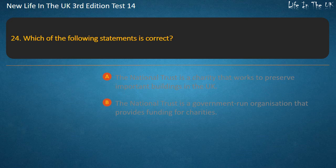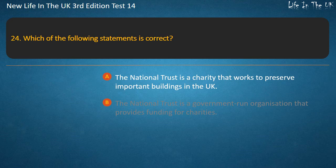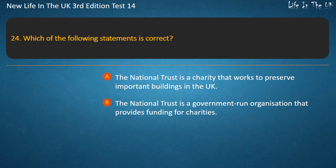Question 24. Which of the following statements is correct? The National Trust is a charity that works to preserve important buildings in the UK, or the National Trust is a government-run organisation that provides funding for charities. Answer: The National Trust is a charity that works to preserve important buildings in the UK.